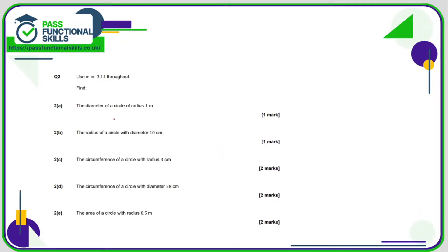Question 2. We've been told that pi is 3.14, but for a lot of these questions we don't even need to use pi. We need to work out the diameter of a circle with a radius of one metre. The diameter is always double the radius, so we just double one to get two. Pi was not needed for that question.